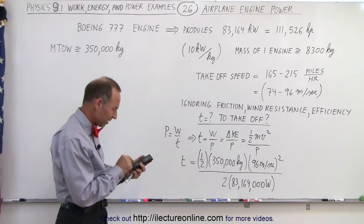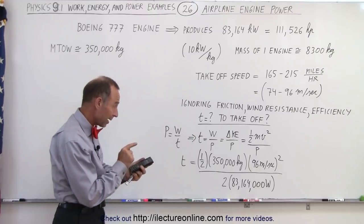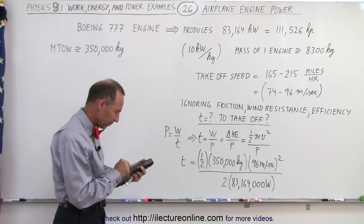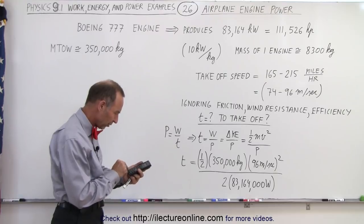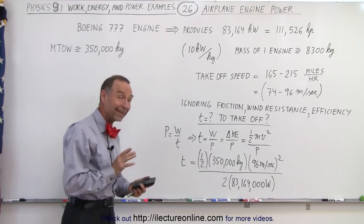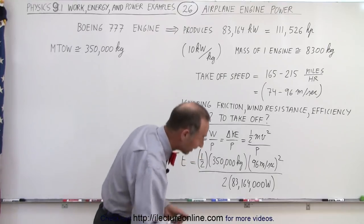So 0.5 times 350,000 times 96 squared divided by 2, and divide by 83,164,000 equals 9.7 seconds. Think about that.